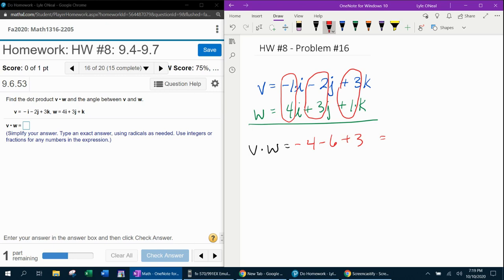And then all you have to do to get the dot product is take those three numbers and add them up. Negative 4, negative 6 is negative 10. Negative 10 plus 3 is negative 7. And we're done with the dot product.